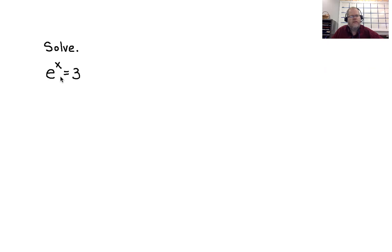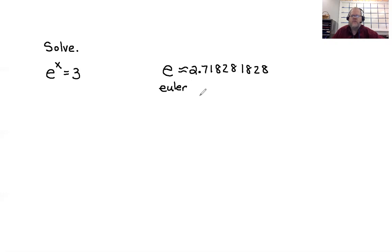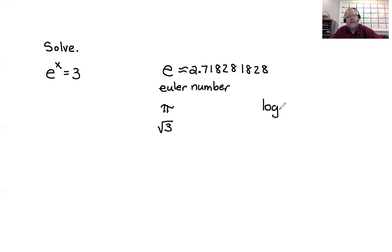The number e — in case we haven't talked about e yet — is an irrational number. It is approximately equal to 2.718281828. It's called the Euler number, spelled E-U-L-E-R, but actually pronounced 'Oiler.' It's an irrational number; one of its cousins is pi. When we have a logarithm with a base of e, we use it so frequently we give it its own special logarithm: ln, which stands for the natural logarithm.